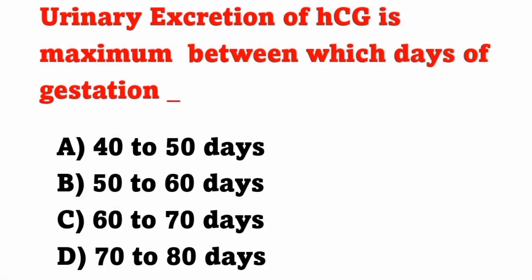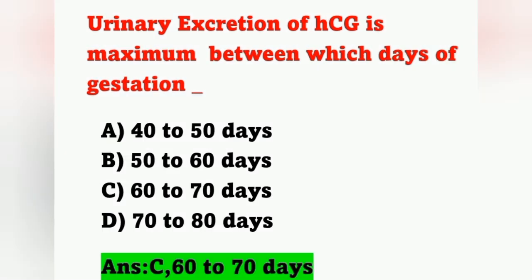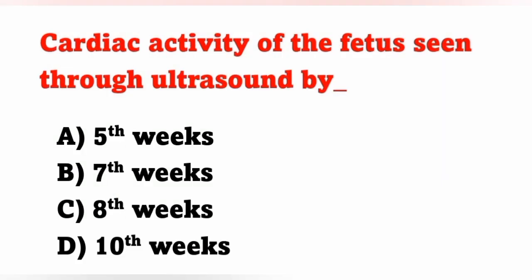The next question: urinary excretion of HCG is maximum between which days of gestation? Options — A: 40 to 50 days, B: 50 to 60 days, C: 60 to 70 days, D: 70 to 80 days. Urinary excretion of HCG (human chorionic gonadotropin) is maximum between 60 to 70 days of gestation — option C is the correct answer.